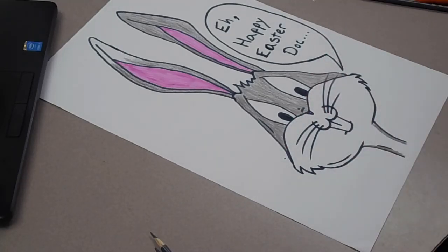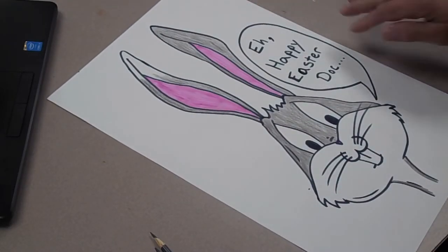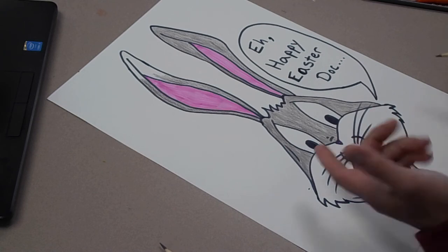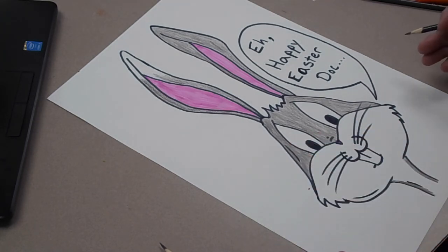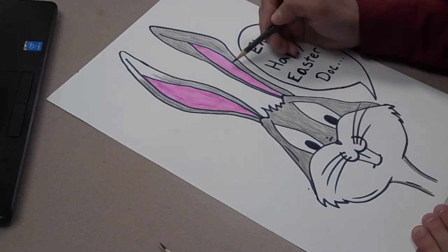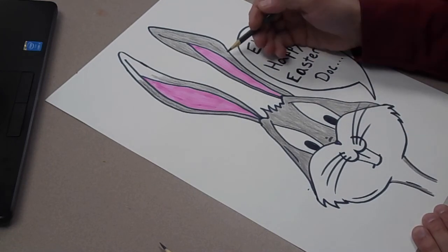Okay. So I'm pretty much done with the coloring part of this. I added a little caption that says, happy Easter doc. And I used mixed media to color it in. So I used a gray colored pencil because Bugs is mostly gray and white. A little bit of pink in his nose. And I used a pink marker for the inside of the ears and the nose.